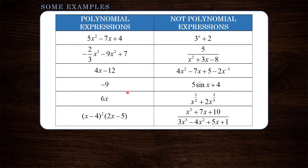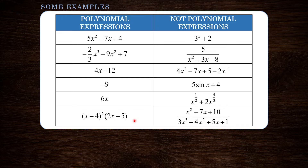Furthermore, the coefficients — the numbers in front of our x terms — are real numbers. So we have, for example, 5, negative 7, negative 2 thirds — these are all real numbers. The last one might throw you off, but just remember if we were to expand that factored expression, we'd have a bunch of powers of x that have whole number exponents and real number coefficients.